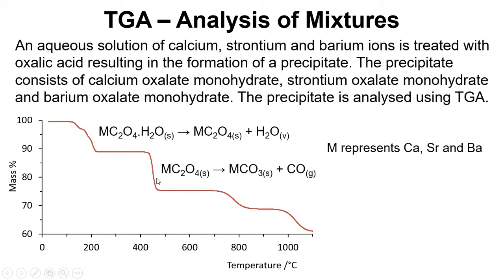The next stage is that these oxalates are losing CO to become carbonates and then at around 780 degrees C we've got calcium carbonate losing CO2 to become calcium oxide and then just above a thousand degrees we've got the strontium carbonate forming strontium oxide and CO2.